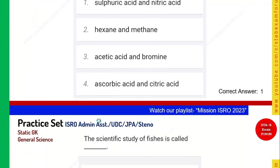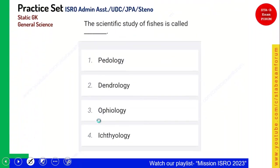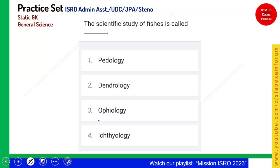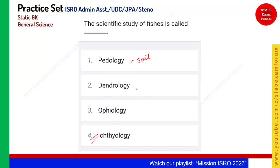The scientific study of fishes is called what? Those who gave ichthyology are correct — it is the study of fish. Pedology is the study of soil. Dendrology is the study of trees. Ophiology is the study of snakes. For this question, option 4, ichthyology, is the correct answer.